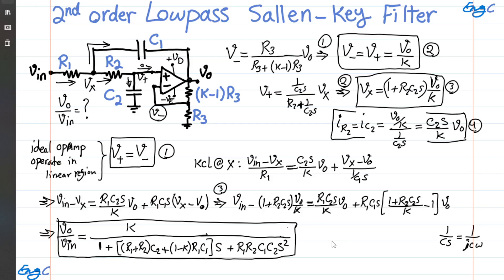At super low frequency or DC, the circuit looks like this: we have Vin, then two resistors R1 and R2 in series going to the op-amp input, with voltage division between (K minus 1)R3 and R3 at the output. Since no current flows into the op-amp input, Vin appears directly at the positive terminal. The negative terminal equals Vin, and since V-negative equals Vout over K, effectively Vout over Vin equals K. This confirms that when omega is zero, s and s² disappear in the denominator and the gain is K.